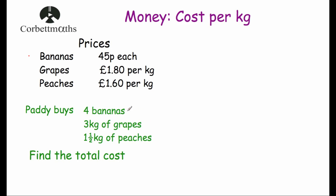We'll find the price of each fruit individually. For the four bananas costing 45p each, we multiply: four times 45p. Four times five is 20, put the zero down, carry the two; four times four is 16, add the two gives 18. So four bananas cost 180 pence, or £1.80.